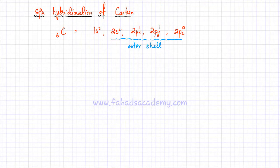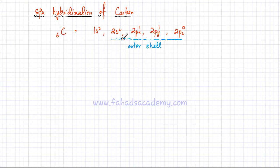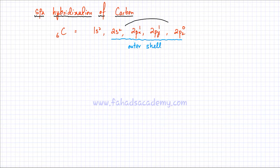In this lecture, we're going to discuss the sp2 hybridization of carbon. Carbon has a total of 6 electrons. The electronic configuration of carbon is that it has 2 electrons in the first shell close to the nucleus — 2 electrons in the 1s orbital — and then 4 electrons in the outer shell. It has a 2s orbital with 2 electrons, a 2px orbital with 1 electron, a 2py with 1 electron, and a 2pz orbital that is empty. So when carbon is about to bond, because of attraction of electrons from the nuclei of other atoms, the electrons in the 2s orbital are going to be attracted in different directions and the octet would expand.